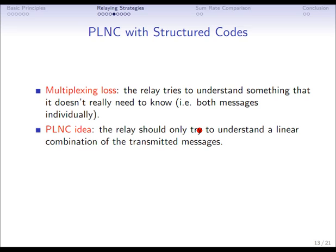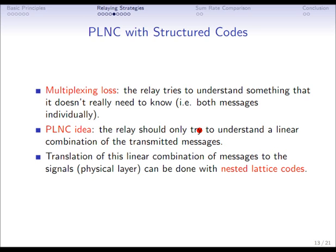The physical network coding idea was that the relay should only try to understand a combination, a linear combination of the messages. In the example it was, it should only understand the parity check. For the more general case, it is possible to translate this combination of messages to the signals, to the physical layer, with the help of so-called nested lattice codes.